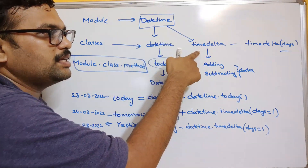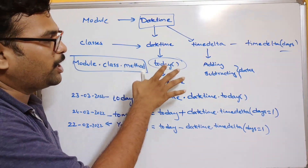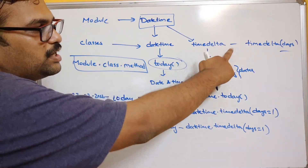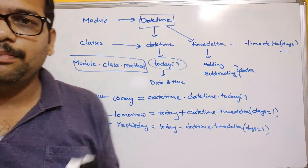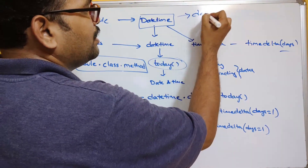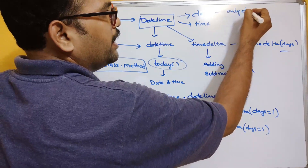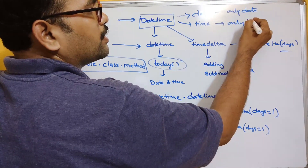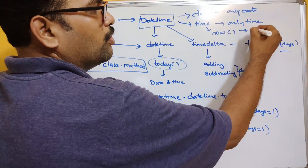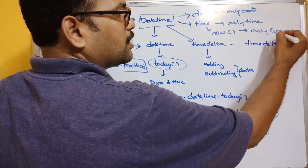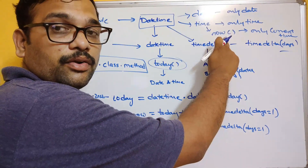Inside the datetime module we have the datetime class and timedelta class. The datetime class has the today() function for getting the current date and time. There are also two more classes: the date class, which represents only the date, and the time class, which has a method called now() that gives only the current time. If you use datetime you get both date and time; if you use time you get only the time.